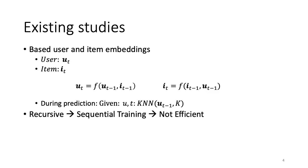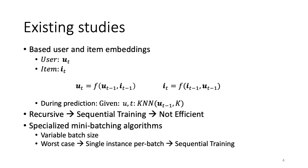This formulation is clearly recursive, which leads to sequential training as opposed to mini-batch training, and this is not efficient. Some studies have proposed specialized algorithms for mini-batch training. However, first, the number of instances varies across batches, and second, in the worst case, a batch might have a single instance, which brings us back to the same problem of sequential training, at least partially. And there is no guarantee that the number of batches with a single instance is not significant. Therefore, in this study, our goal is to alleviate this problem of recursive dependency to improve both the efficiency and effectiveness of this family of algorithms.